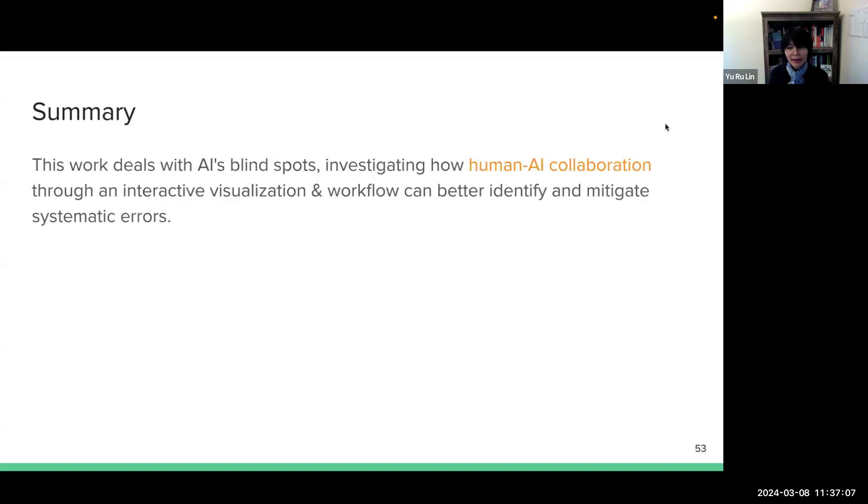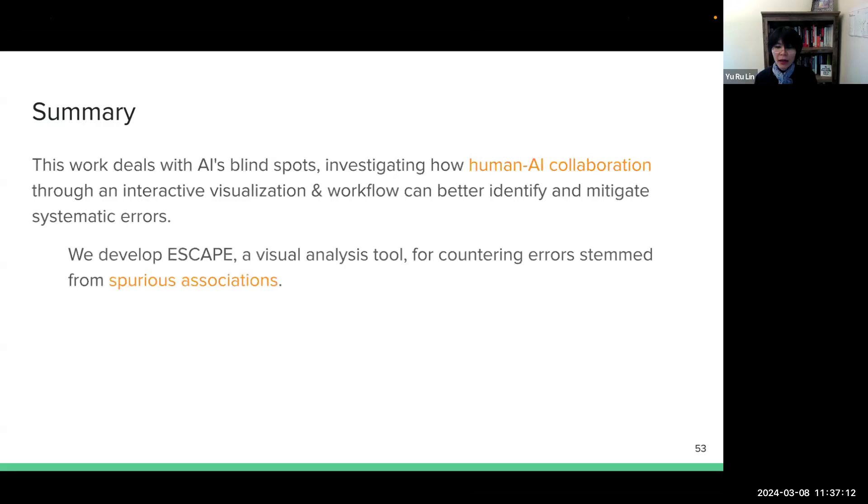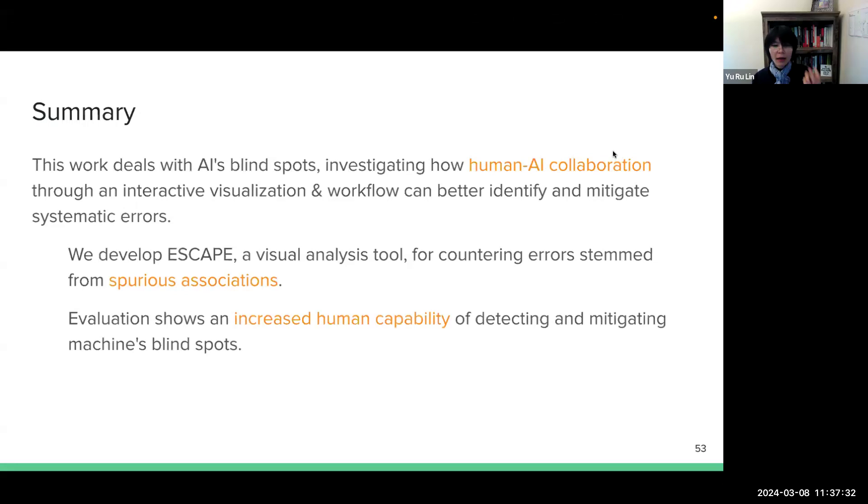All right. So to summarize, this work deals with AI's blind spots. And we study how human-AI collaboration can better identify and mitigate the systematic errors. ESCAPE is a visual analysis tool for countering errors stem from the spurious association. And our evaluation shows an increased human capacity to deal and mitigate with machine's blind spots.